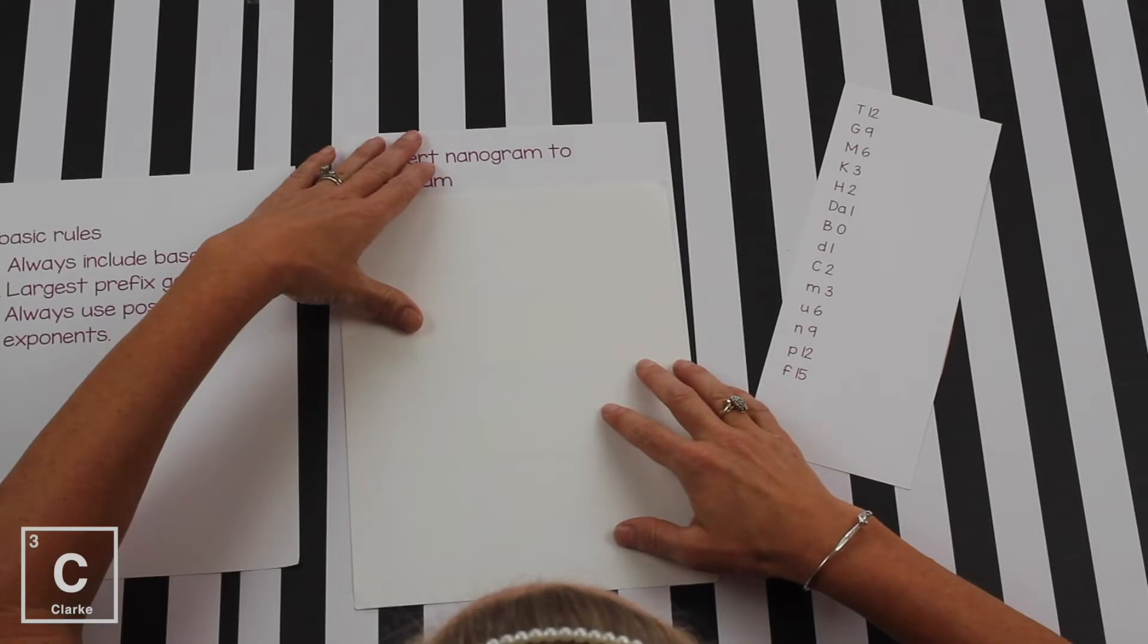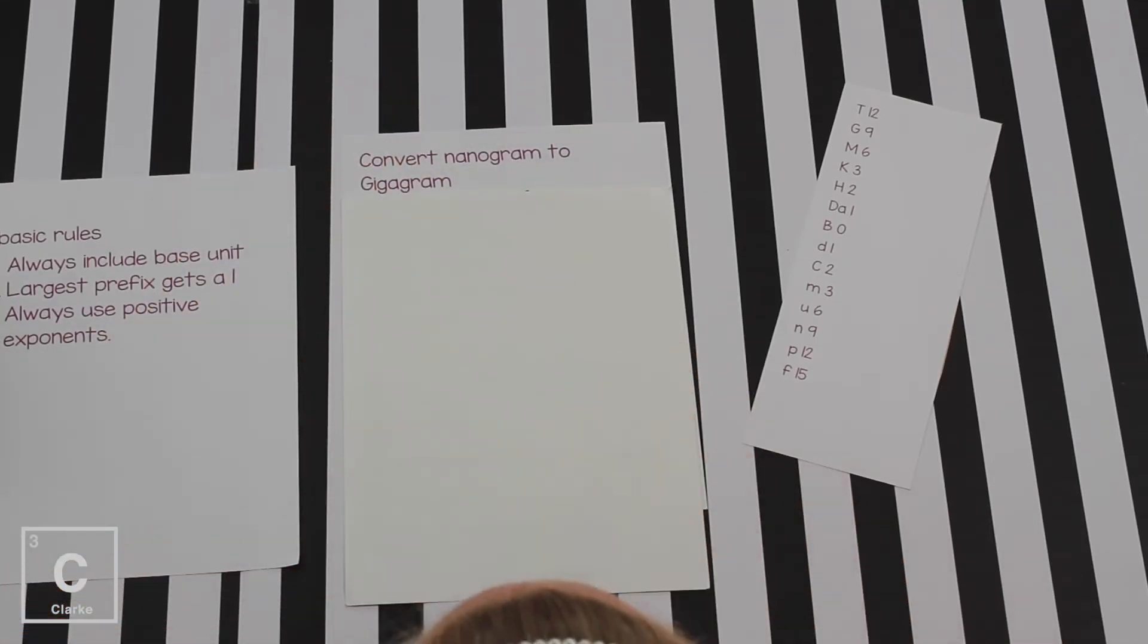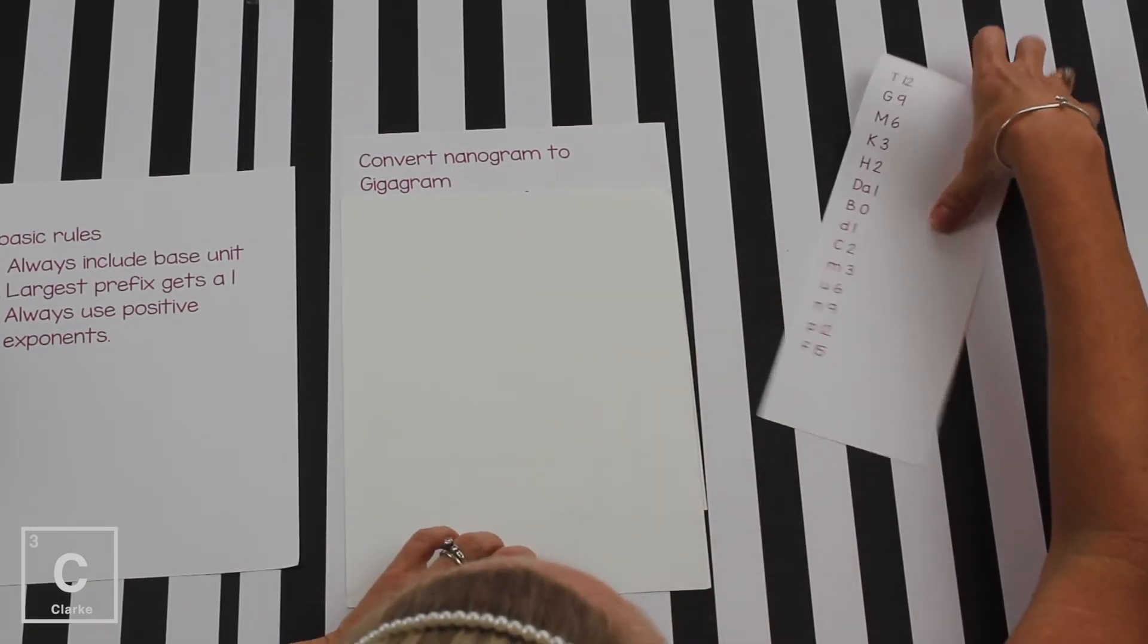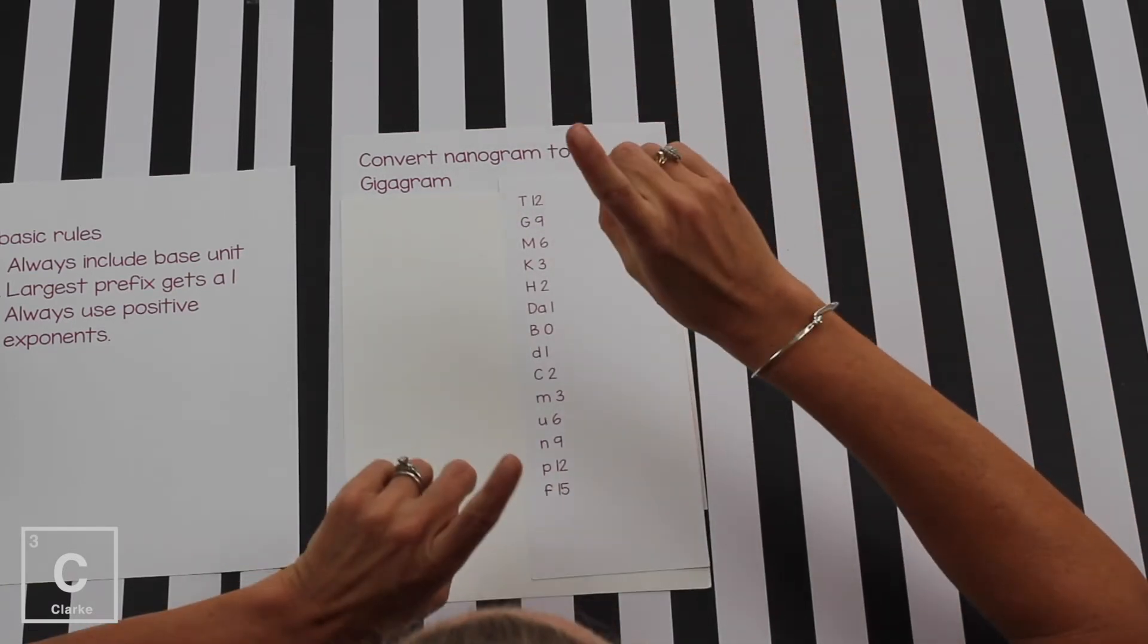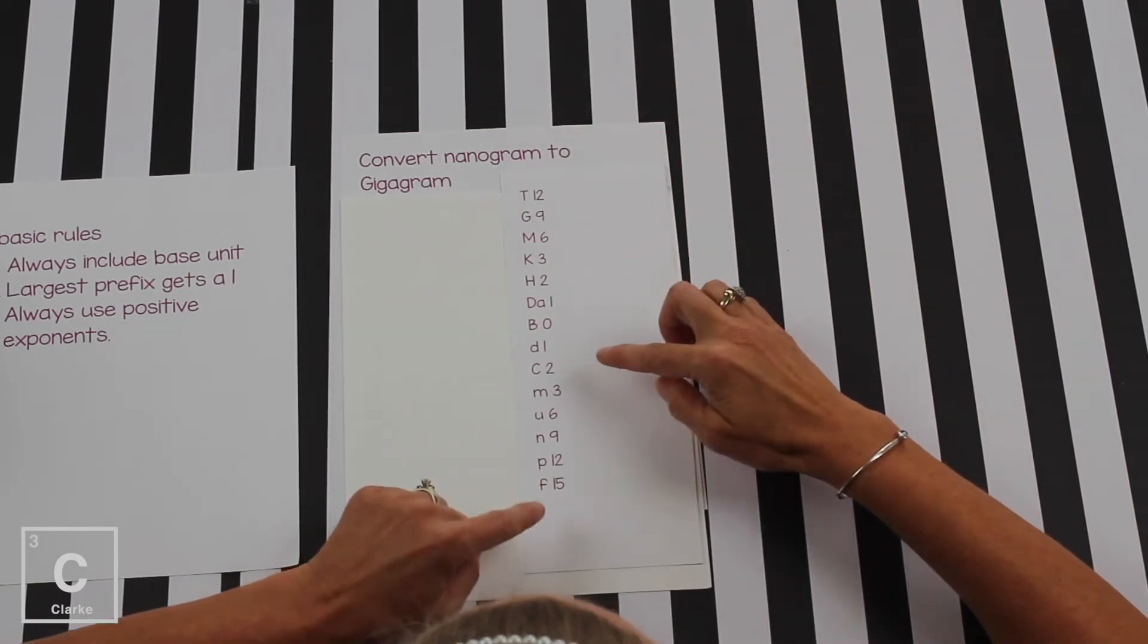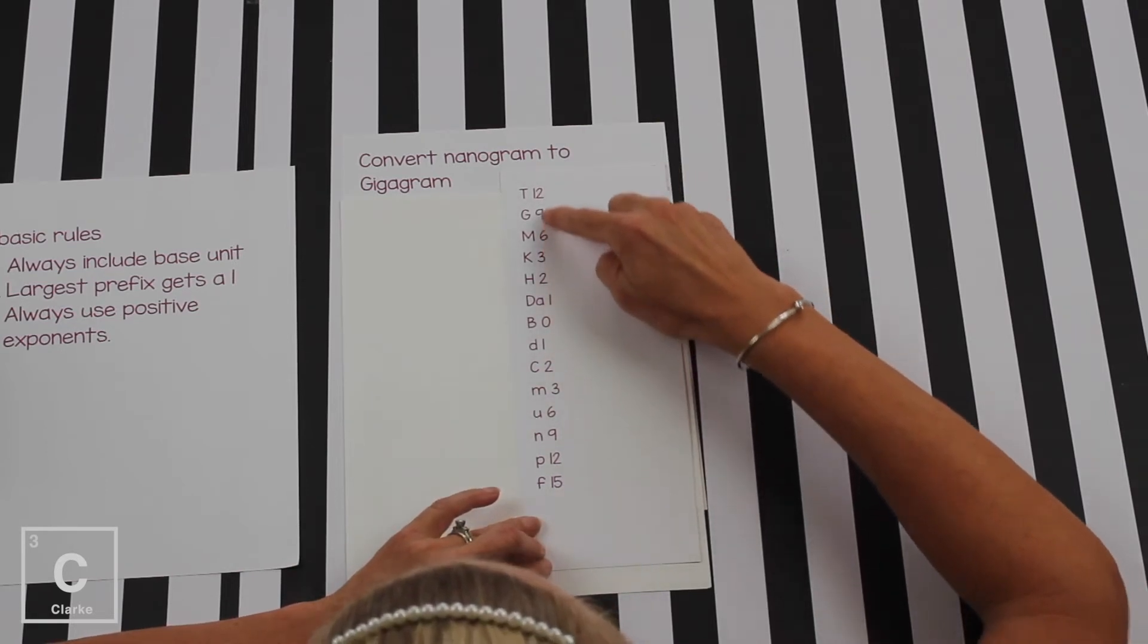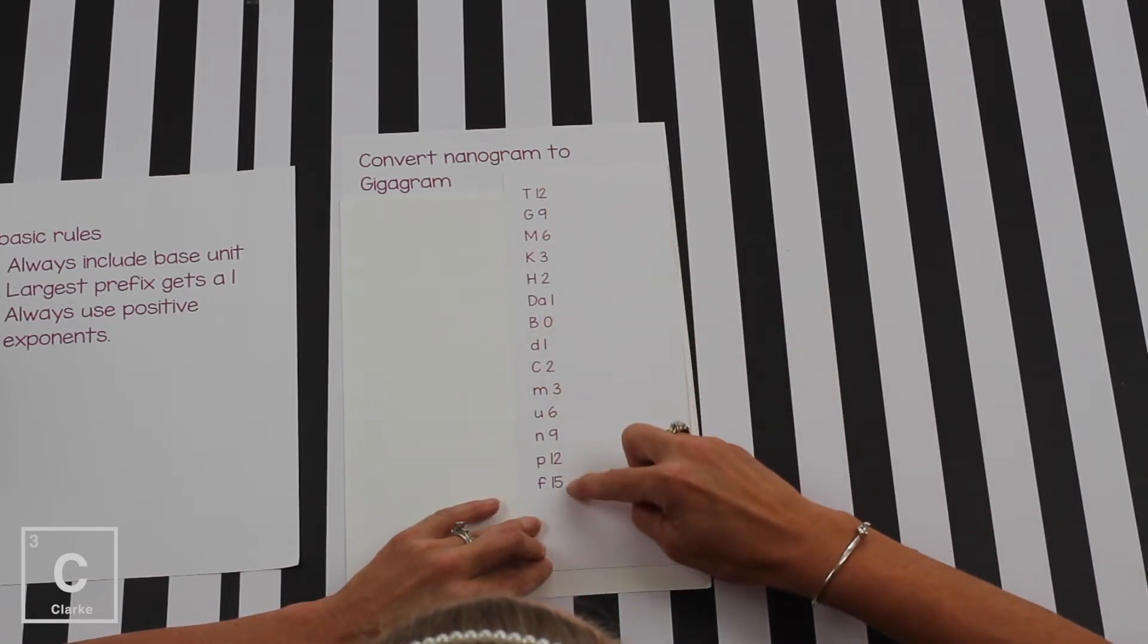So, let's make a conversion factor. If we were going to convert nano to giga. So, it says convert a nanogram to a gigagram. So, again, here's my little fancy cheat sheet. Make sure and recopy that every time. Don't do like I just did and just pull it over here. So, we've got our 1, 2, 3, 6, 9, 12, 1, 2, 3, 6, 9, 12, and then 15.